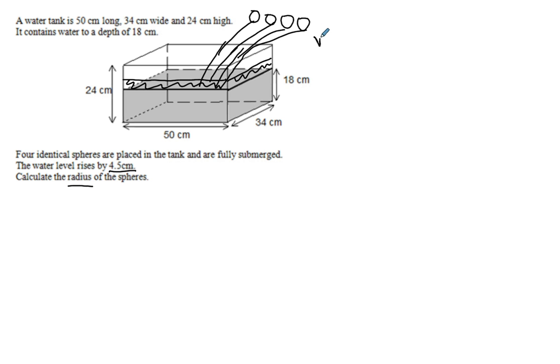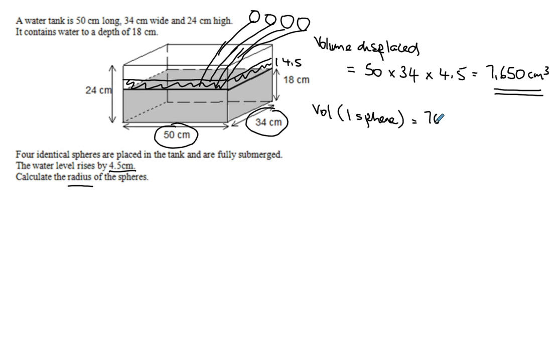I'm going to calculate the radius of the spheres. So the volume displaced. That's not going to change. That's not going to change. Will be 50 times 34. And you can see it rose by 4.5, so times 4.5. And you get 7,650 centimetres cubed. Now this volume is for the four spheres. So the volume of one sphere will be 7650 divided by four, which is 1912.5.